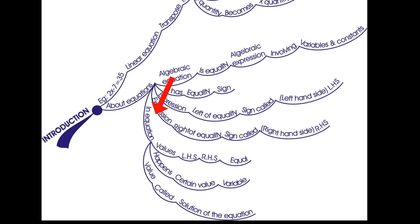In an equation, the values of LHS and RHS are equal. This happens to be true only for certain values of the variable. This is called the solution of the equation.